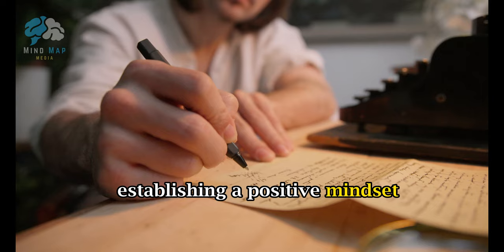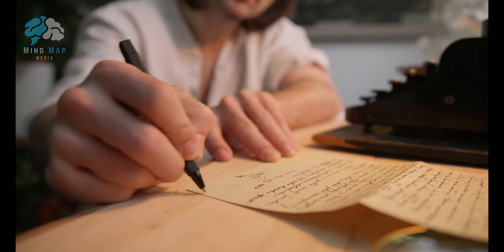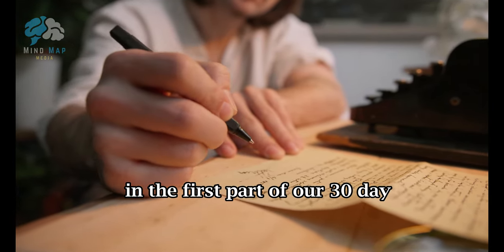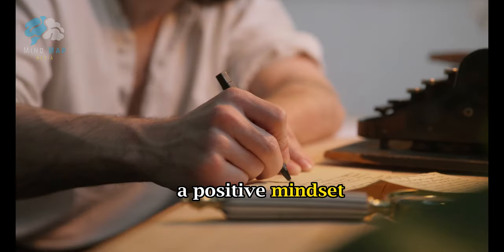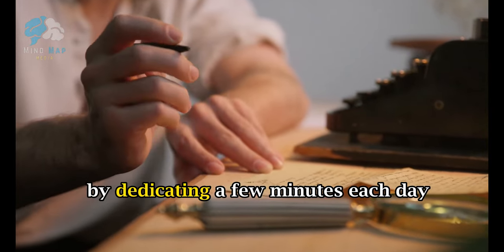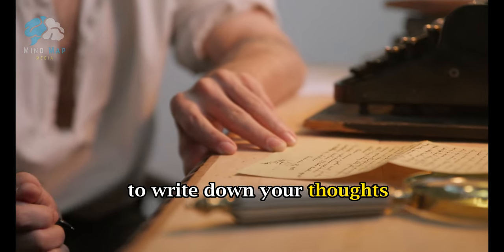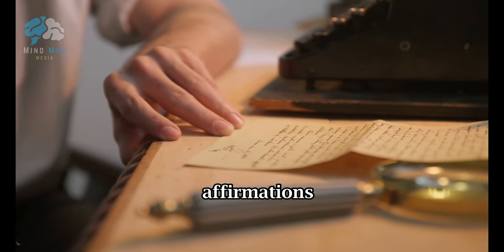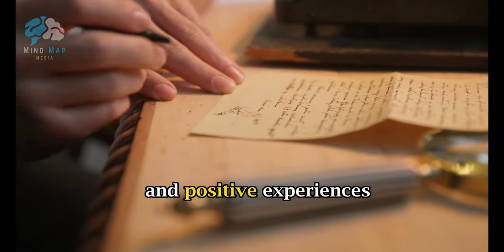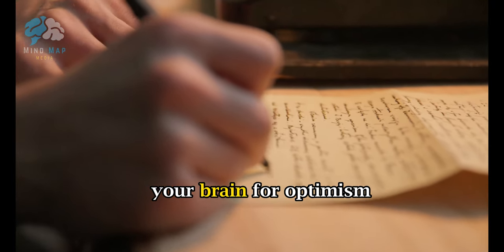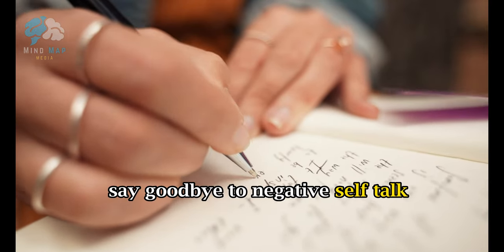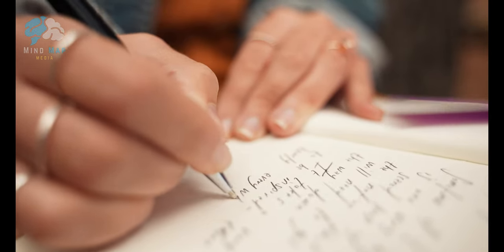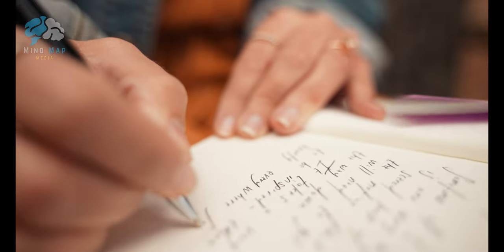Establishing a Positive Mindset. In the first part of our 30-Day Journaling Challenge, we will focus on establishing a positive mindset. By dedicating a few minutes each day to write down your thoughts, affirmations, and positive experiences, you will start rewiring your brain for optimism and resilience. Say goodbye to negative self-talk, and welcome a new perspective on life.